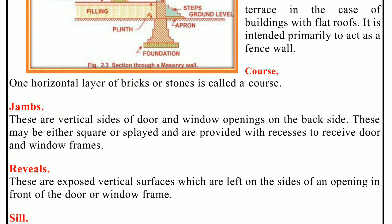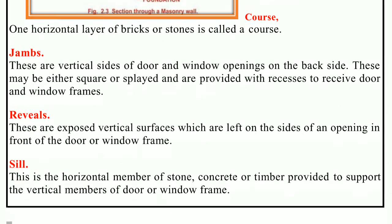This is called bearing; the bearing is typically 100 mm to 200 mm. Next, label — the projecting course from an arch or window head is known as a label. Next, apex — the coping provided at the summit or gable wall is known as an apex or summit.